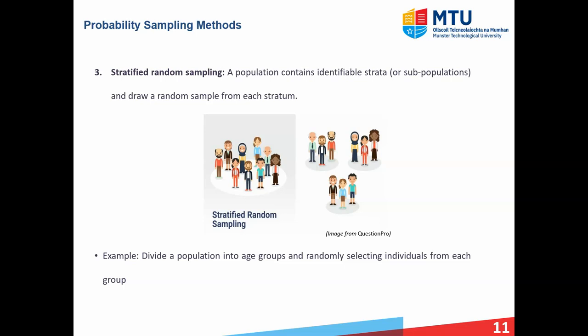Next is stratified random sampling, where you have a population with identifiable strata or sub-populations and you draw a random sample from each stratum. Consider a population broken up into age groups as your strata — for example, under 20, between 20 and 40, and above 60. From each stratum you then randomly select individuals using techniques like simple random or systematic sampling.